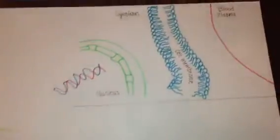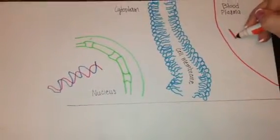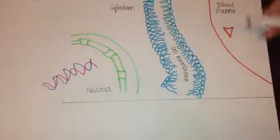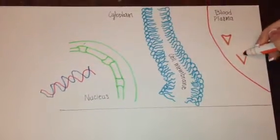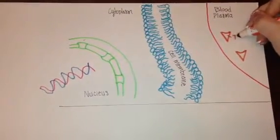When they are released, T3 and T4 enter the bloodstream and attach to protein carriers called thyroxin binding globulin or TBG.